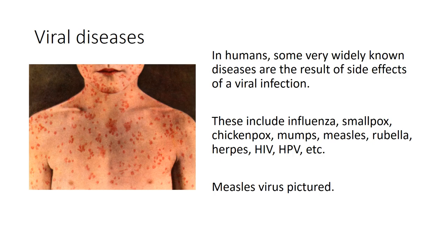There are all kinds of diseases humans can get from all kinds of things — genetic defects, environmental factors, bacterial infections, or viral infections. In terms of viral diseases, the common cold is caused by a virus, as are influenza, smallpox, chicken pox, mumps, measles, rubella, herpes, HIV, and HPV. All of these are conditions humans can contract when a virus hijacks their host cells. The picture shown is some of the symptoms seen from someone who has measles.